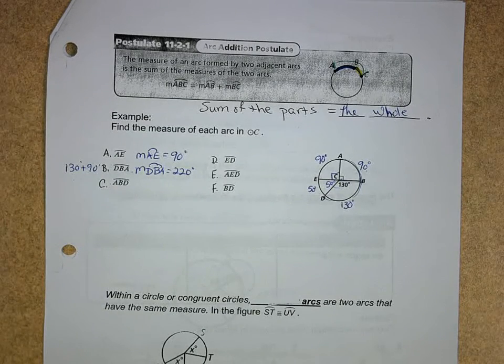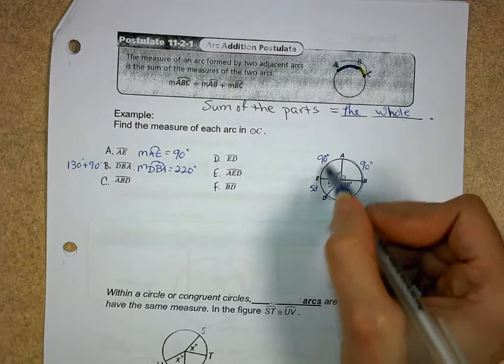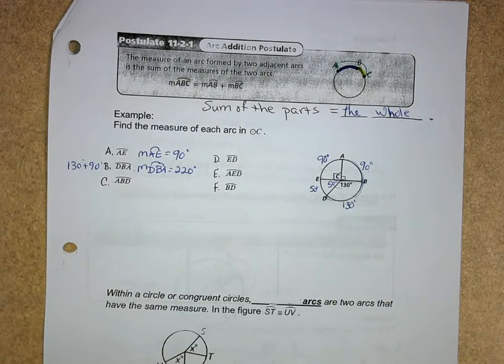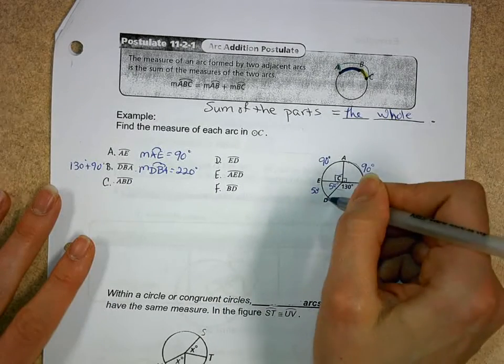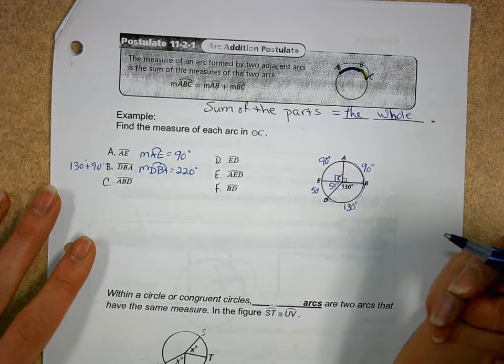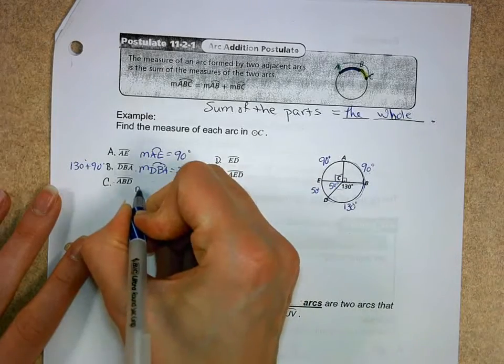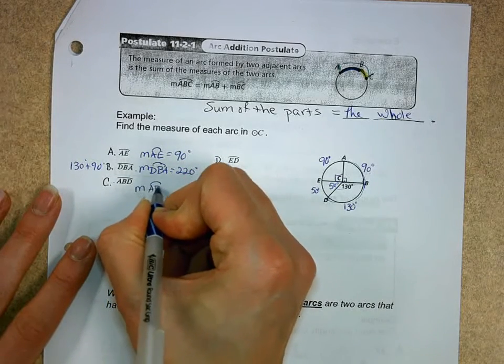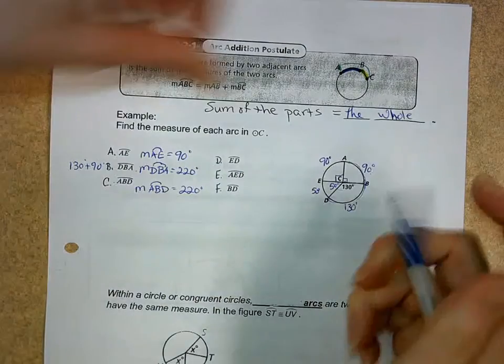Now another way that someone did it is like, well, what if I did 360 minus 140? Yeah, that works. No one's going to stop you. Okay? How about the measure of arc ABD? I hope you realize DBA and ABD are the same thing. So you shouldn't have to do any new calculations. It's exactly the same arc. We're hoping to emphasize that.